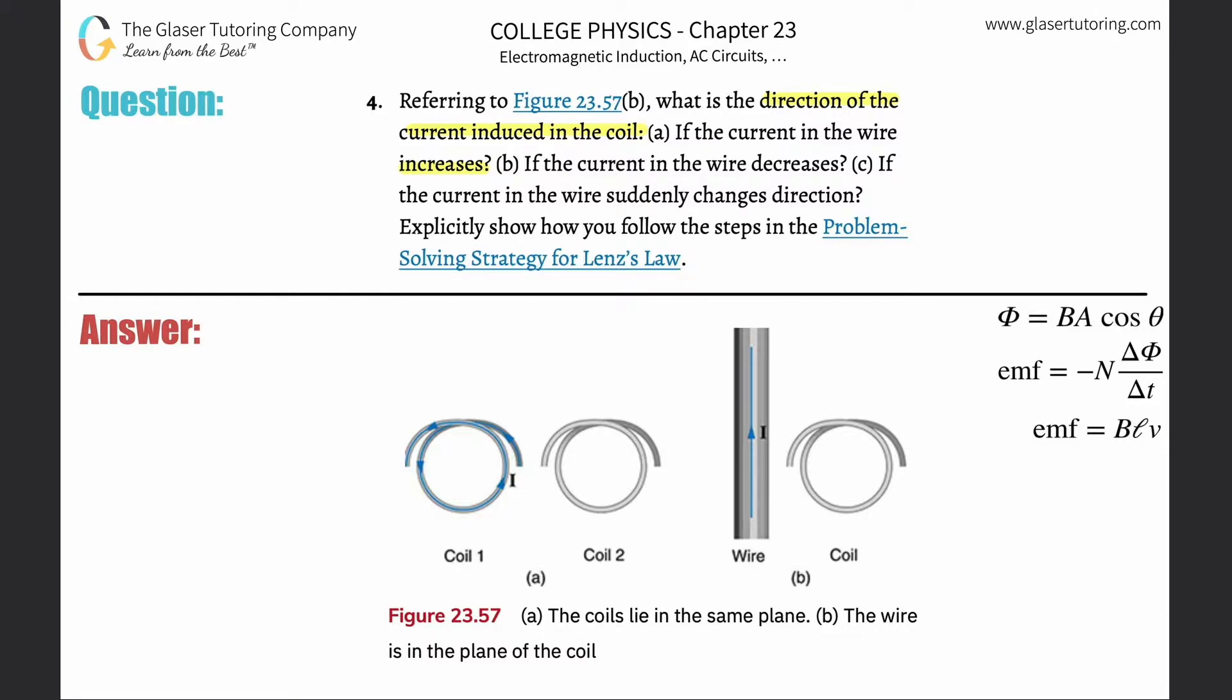Check out number three. I went through a detailed analysis of this kind of induced current stuff, so this one I'm going to just apply it a little faster. Here we have a current moving upwards. That means there is a magnetic field according to right-hand rule number two, which we covered in chapter 22, that would rotate around this particular wire.